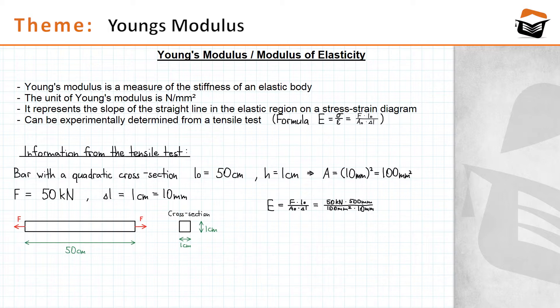And as you see, the units millimeter cancel each other out here. So we are left with kilonewton per square millimeter, and the value of E, of Young's modulus for the material of our bar, is therefore 25 kilonewton per square millimeter.